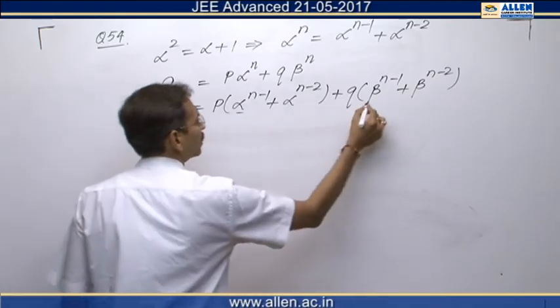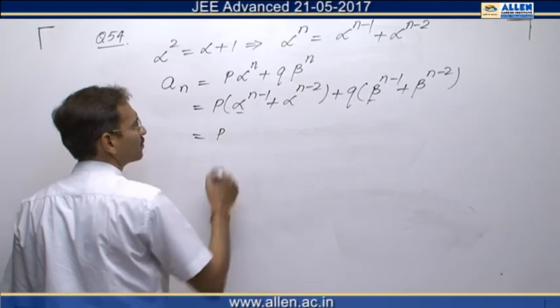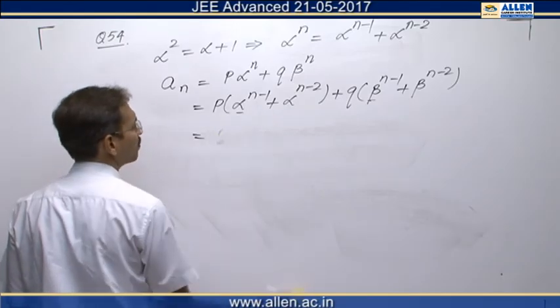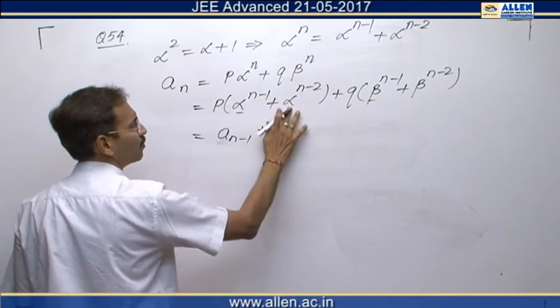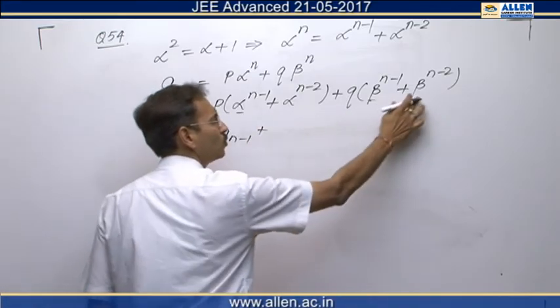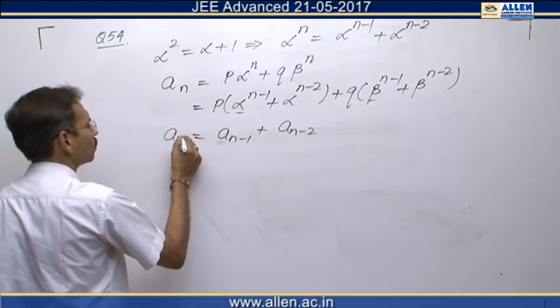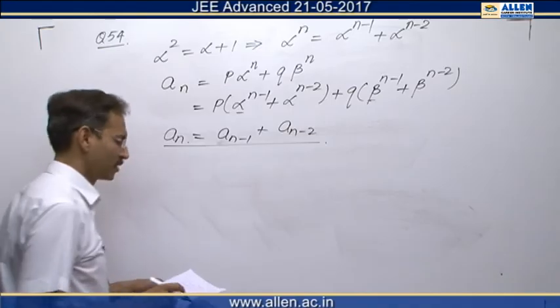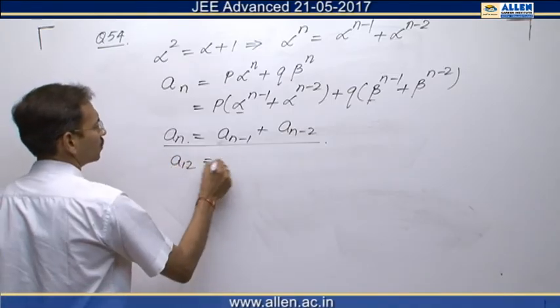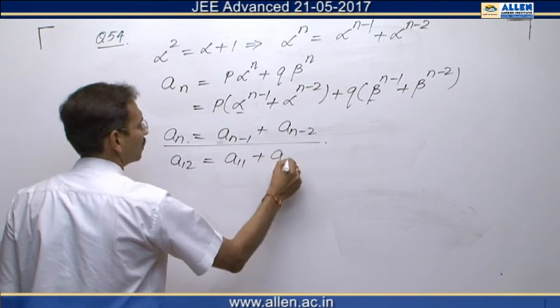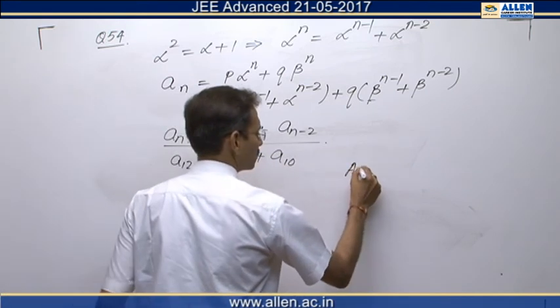Let us split it, we will club these 2 terms that gives us An minus 1, then P alpha raise to the power n minus 2 plus Q beta raise to the power n minus 2 will be An minus 2. So, this is a recursive relation and they are asking us A12. A12 gives us A11 plus A10, therefore C is the correct option, answer is C.